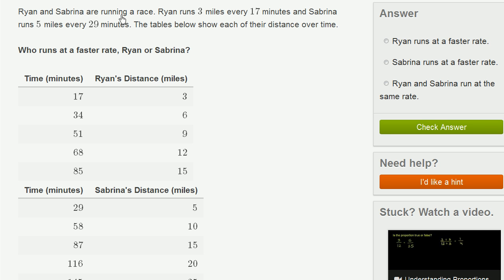We're told Ryan and Sabrina are running a race. Ryan runs three miles every 17 minutes, and we see that right here. After 17 minutes, he's run three miles. Sabrina runs five miles every 29 minutes. After 29 minutes, she has run five miles.